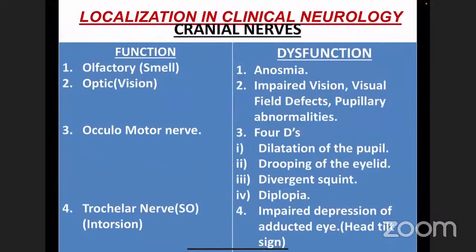Now we shall go to the cranial nerves — 12 pairs in total. First is the olfactory nerve, responsible for smell. When affected, patients have anosmia — loss of smell. Common causes include head injury, where olfactory filaments get sheared, and olfactory groove meningioma.